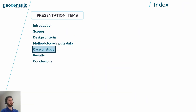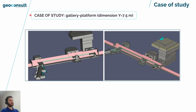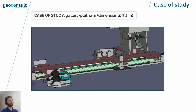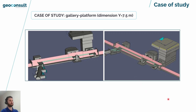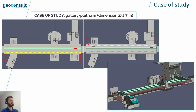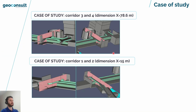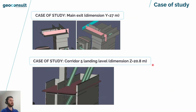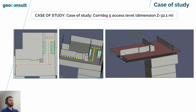The next item will be the case study. I am going to present the different case studies according to the coordinates selected, but we are only focused on the study of the platform level and the high level of the platform. We have one case study with measurement points for corridors 3, 4, 1, and 2; another for the secondary exit and corridors 6 and 5, and the lobby to the main exit; and another case for the main exit, corridor 5, and access level.